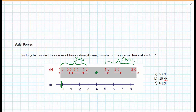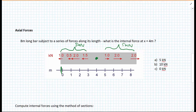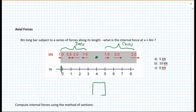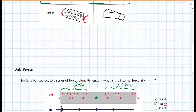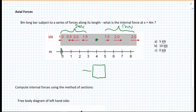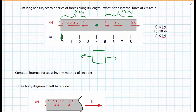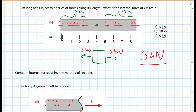So we have to redefine what we mean by internal force. We imagine a piece of material at this point x equals four meters. What we're really interested in is the equal and opposite forces on this piece of material — that then is the internal force. In the case above, we have five kilonewtons and five kilonewtons, so we consider the internal force to indeed be five kilonewtons.